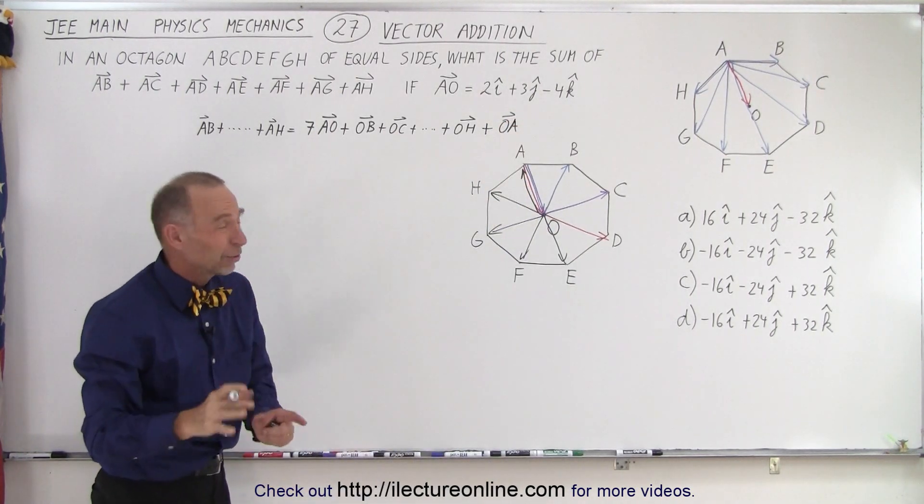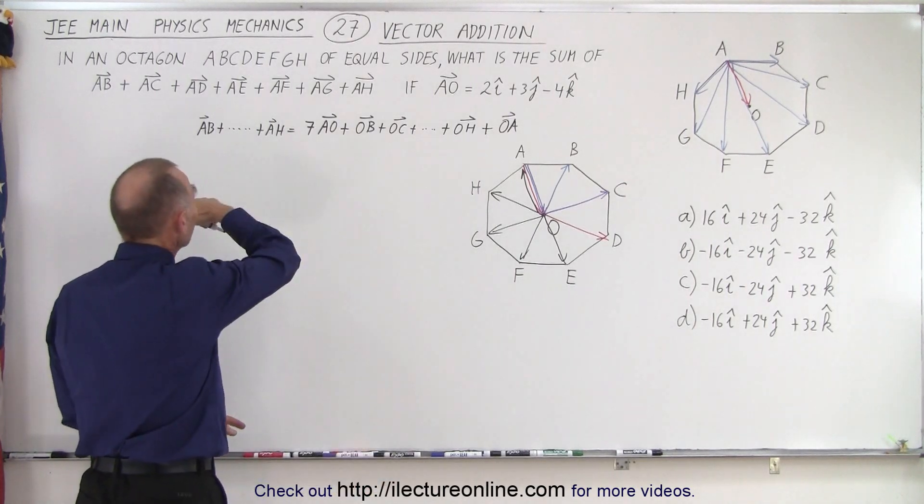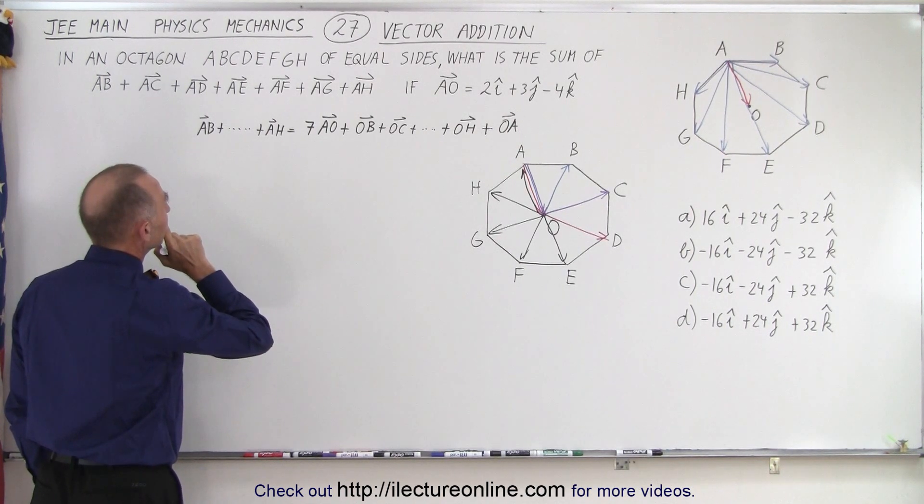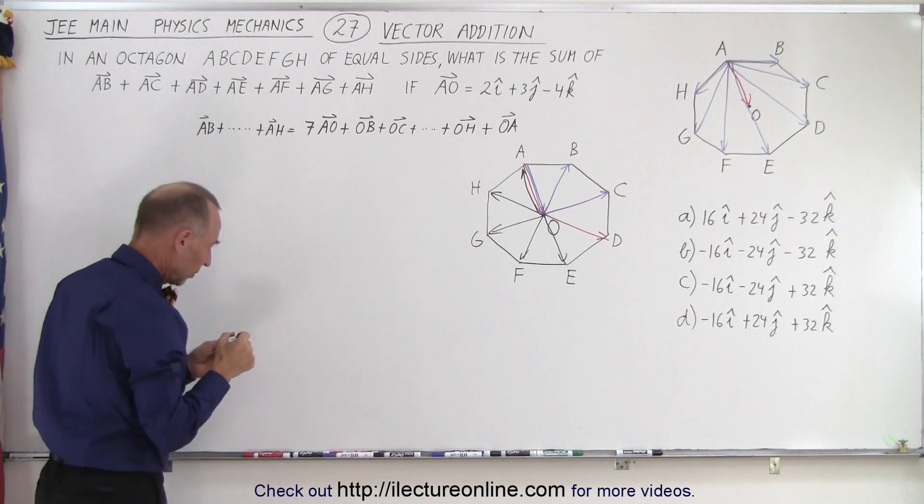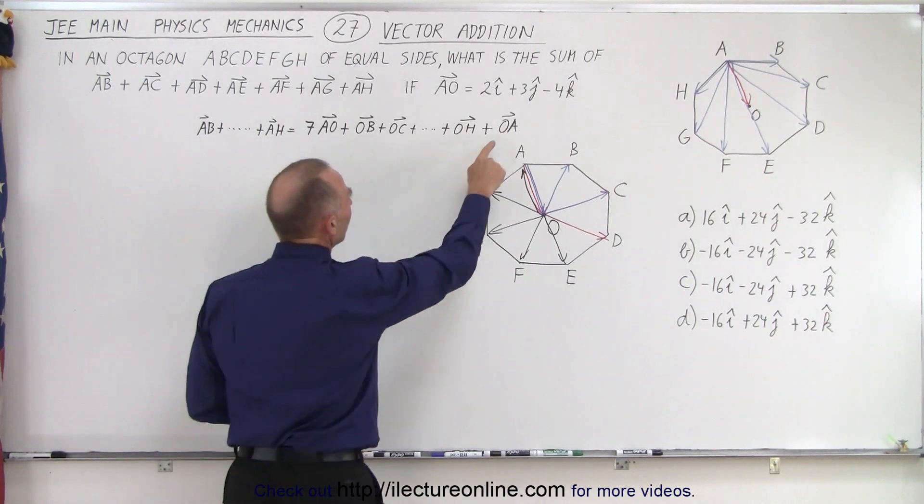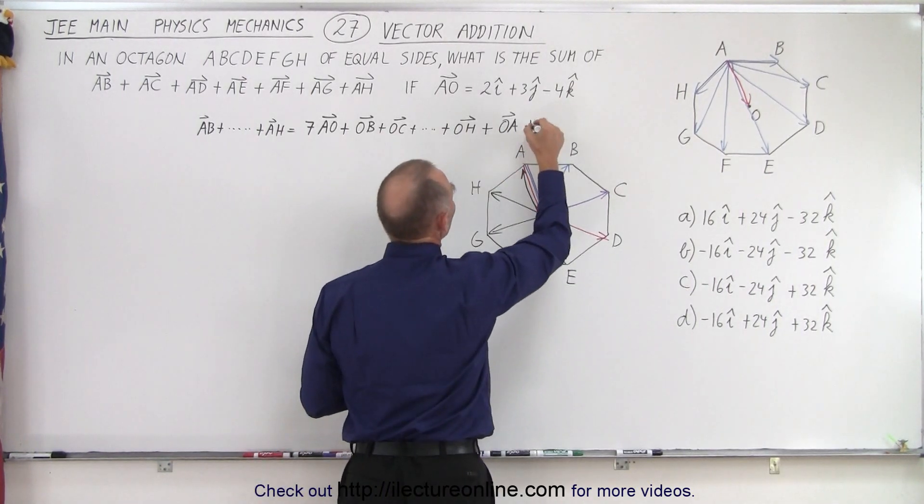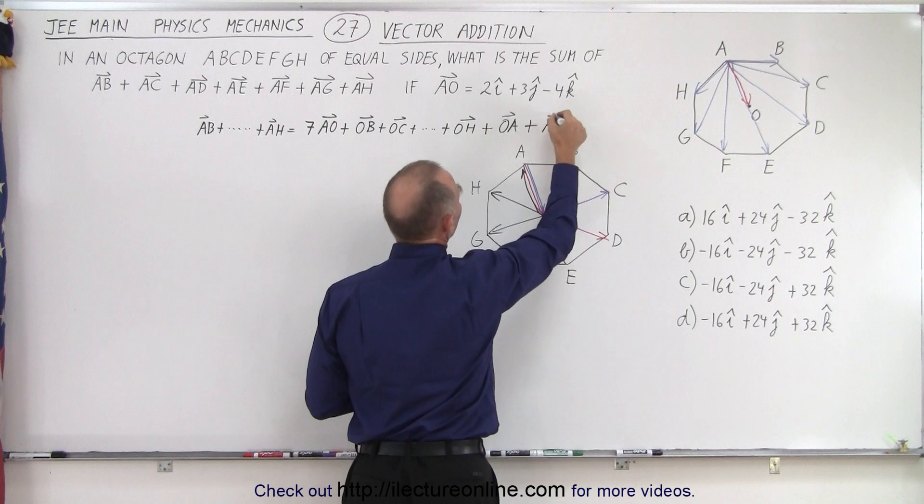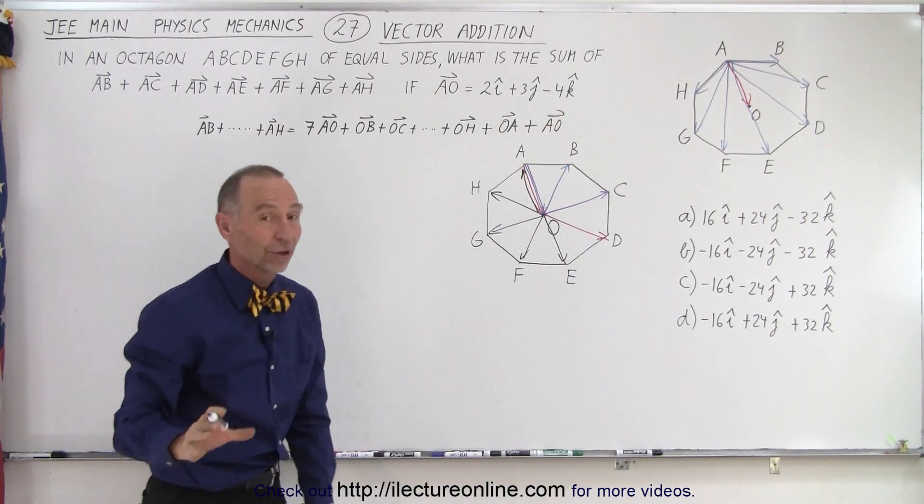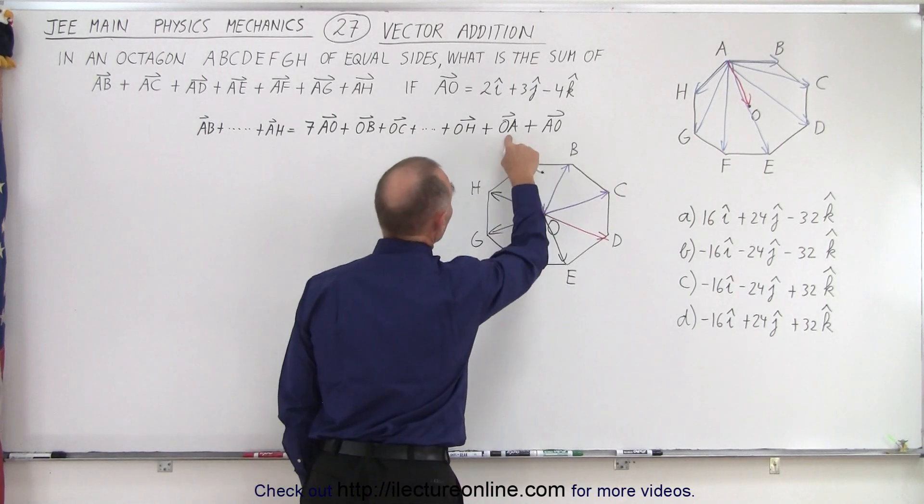So you have this vector, you have this vector, this vector, this vector, but you also need this vector. If you have eight vectors like this, and you add them together, they add up to zero. So that means if I then add plus the vector from O to A on the right side, well, of course, if I add that to the right side, I have to add that to the left side.